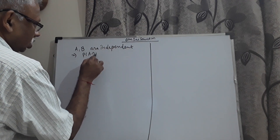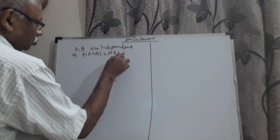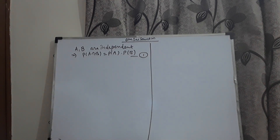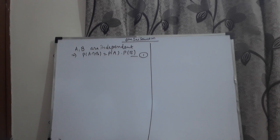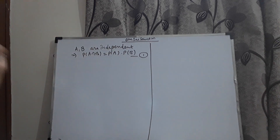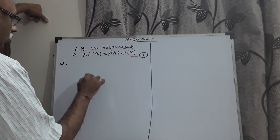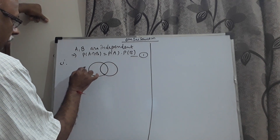A and B are independent, which implies P(A∩B) = P(A)·P(B). Two events are independent if P(A∩B) = P(A)·P(B) — the occurrence or non-occurrence of one event does not affect the other. This is called the multiplication theorem of independent events. Let me draw a Venn diagram: this is A, this is B, this is A∩B, this is A∩B', and this is A'∩B.